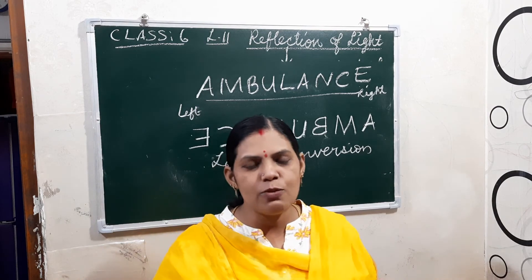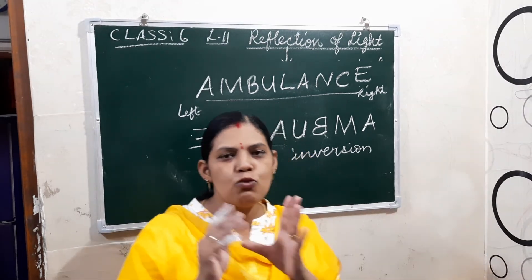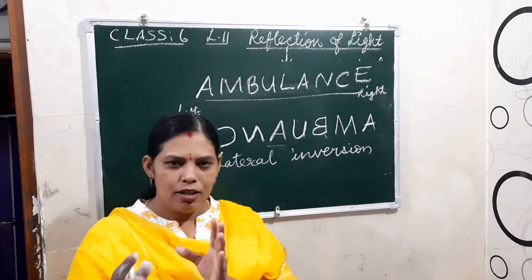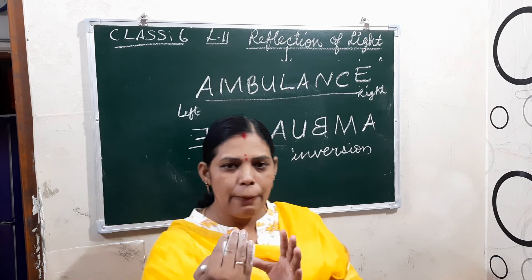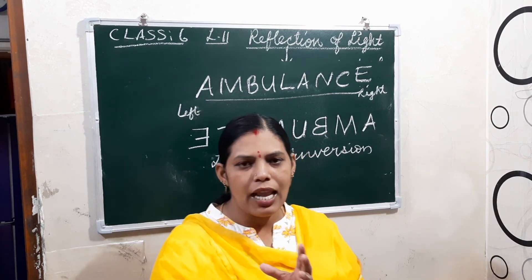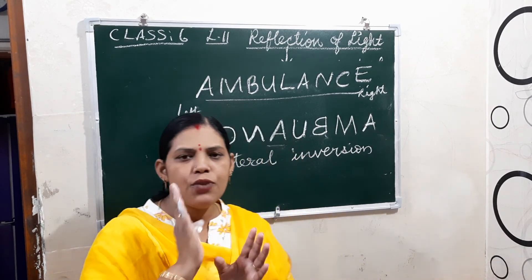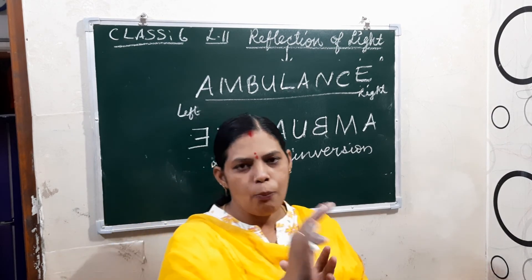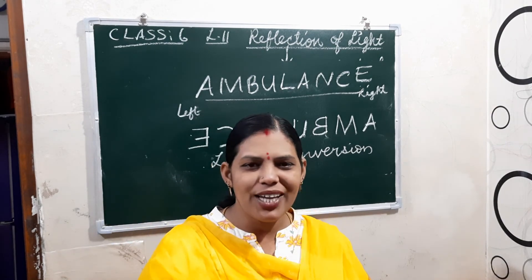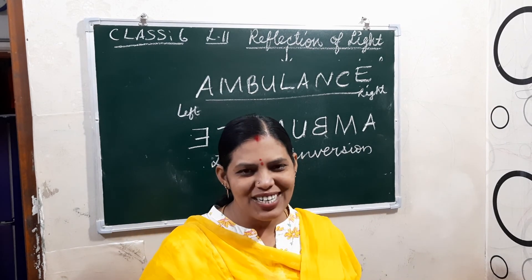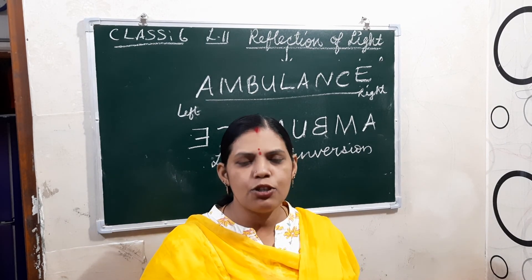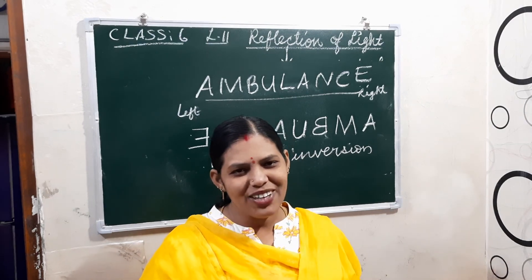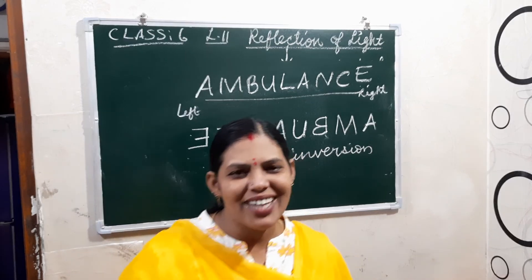So children, what is meant by reflection? It is the bouncing back of light, or the changing of the path or direction of light when it falls on a mirror or smooth opaque object. Your chapter is now completed. Thank you, have a nice day.